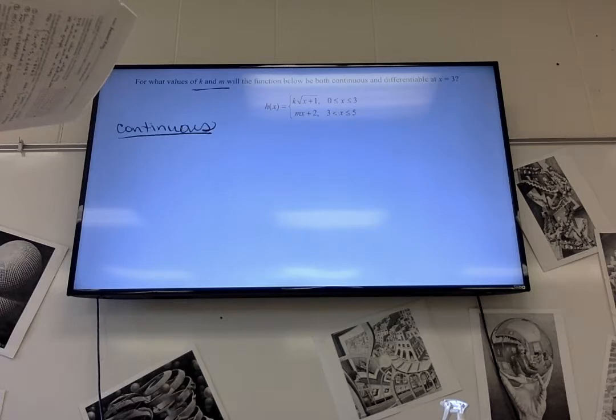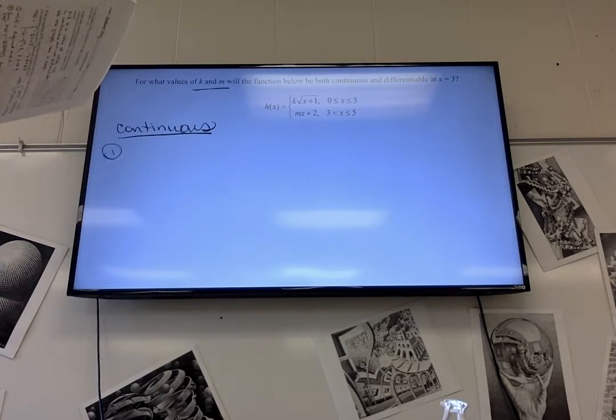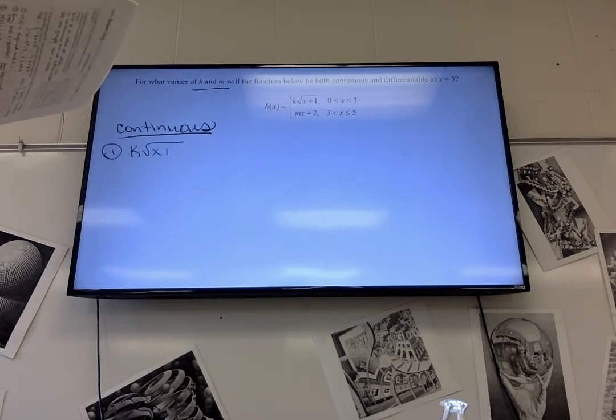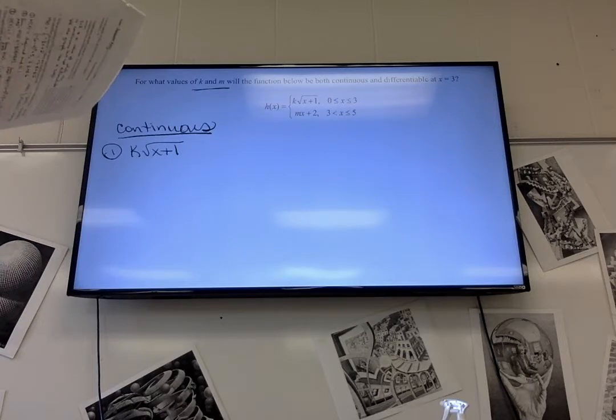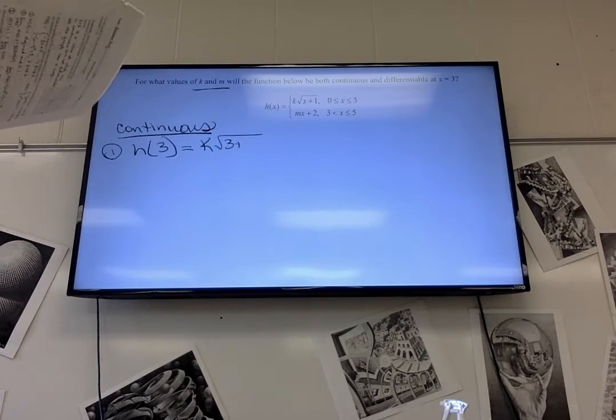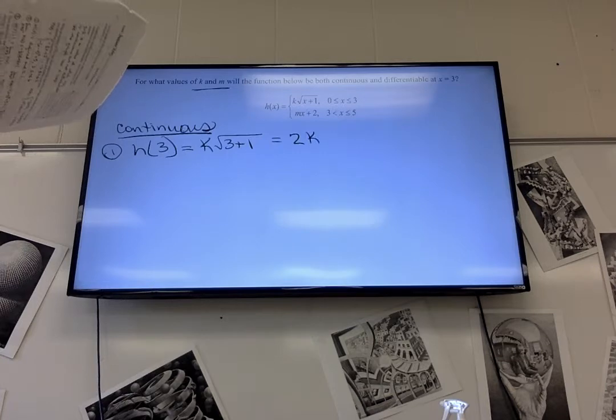Alright, so we're going to plug in three. We're going to try to find if it's continuous at three, or where it would be continuous at three. We're going to make it continuous. So we know that k times the square root of x plus one. We should say that h of three is k times the square root of three plus one, which is 2k. We just don't know what it's supposed to equal.